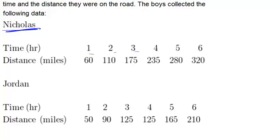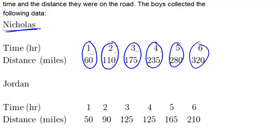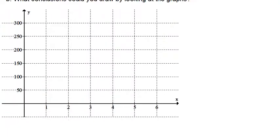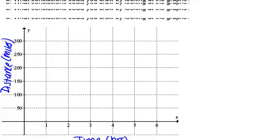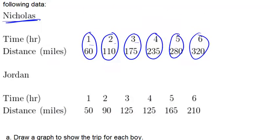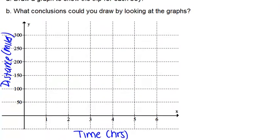So what we're going to do is make a double line graph. First we can do Nicholas's line and then Jordan's. So to make the double line graph you're going to plot each of these pieces of data as points. Where time is our x-axis and distance is our y-axis. So first on our graph we can set it up for time in hours and distance in miles and then start to plot the points. So the first point that we'll plot for Nicholas is 1, 60 and then 2, 110. So 1, 60 would be about right here, 2, 110 is about right here, and I'll continue to plot the rest of the points.